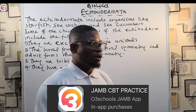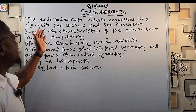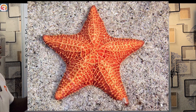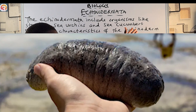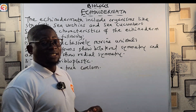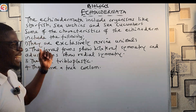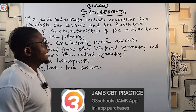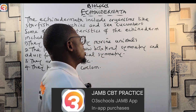The Echinodermata includes organisms like starfish — shown on the screen right now — the sea urchins, and the sea cucumbers. These are the classes of organisms that belong to the phylum Echinodermata: the starfish, sea urchins, and sea cucumbers. Now let's look at the characteristics of the echinoderms.